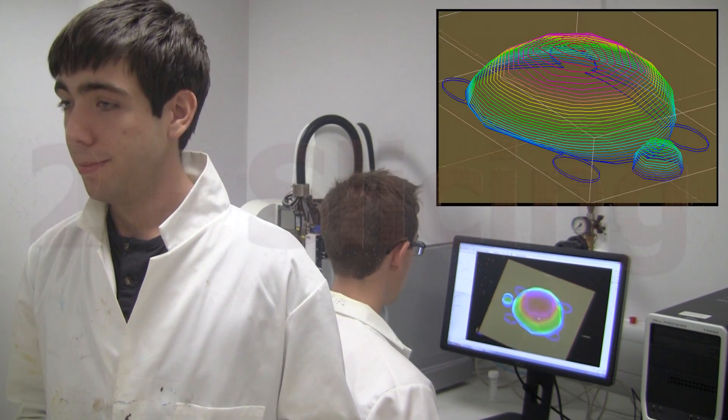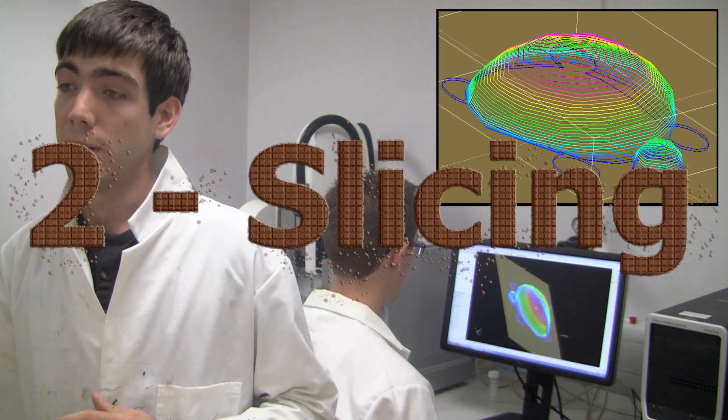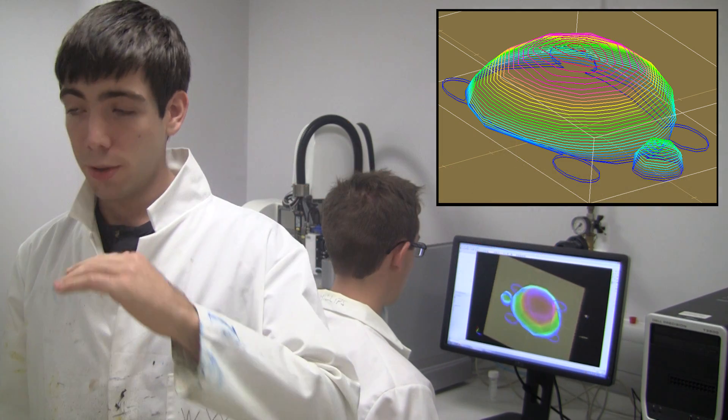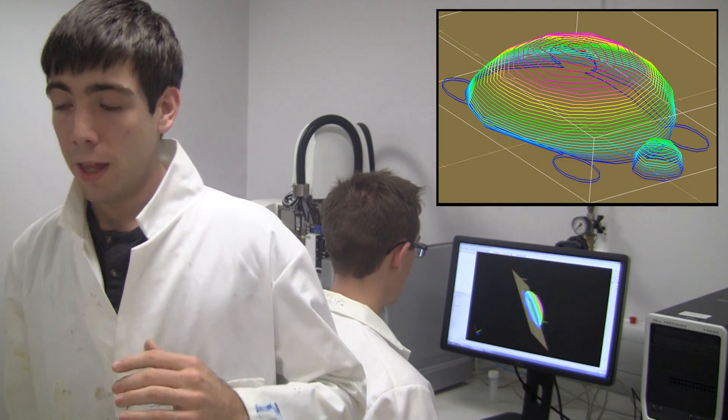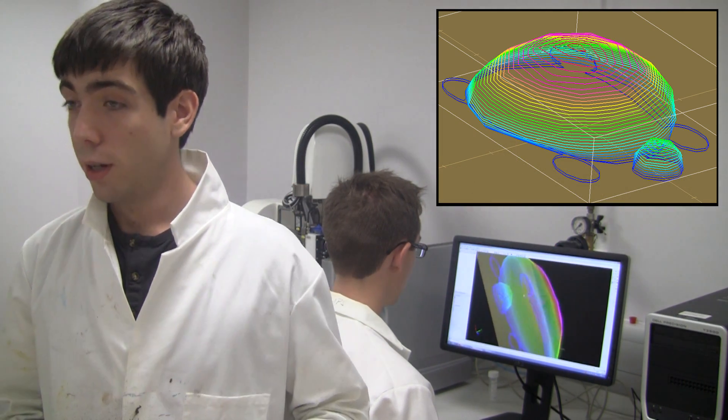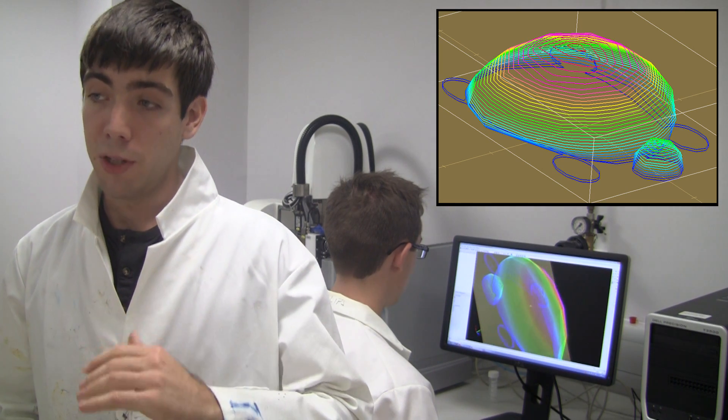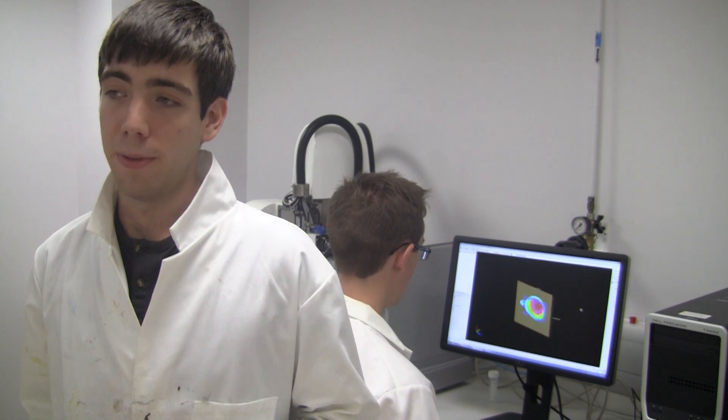Once your chocolate design is completed, the software will then slice it into horizontal chocolate layers, and then the chocolate printer will print the layers on top of each other, giving shape to the 3D object.